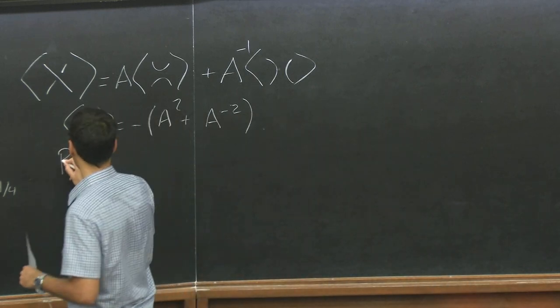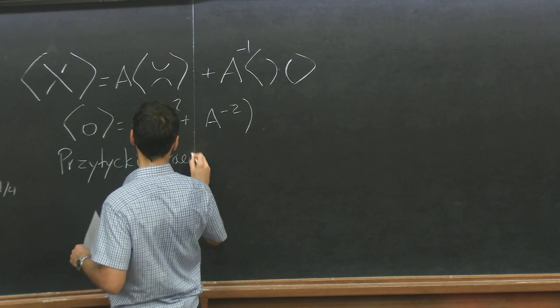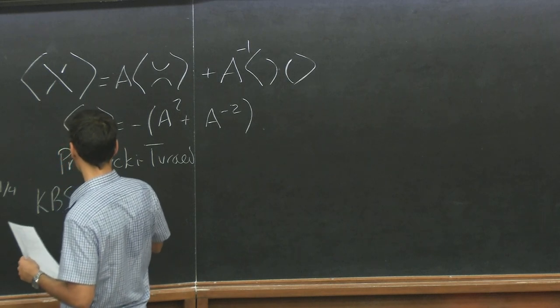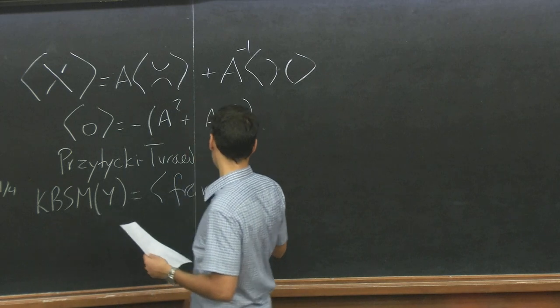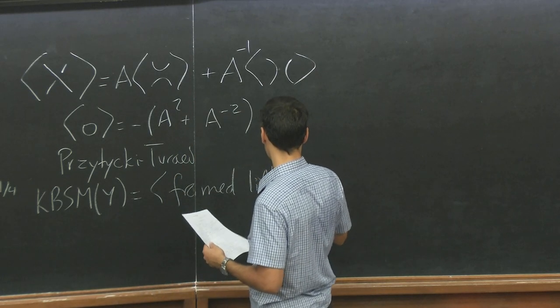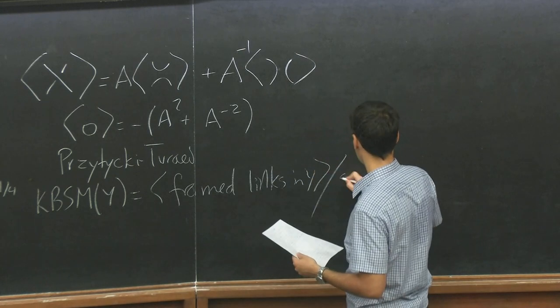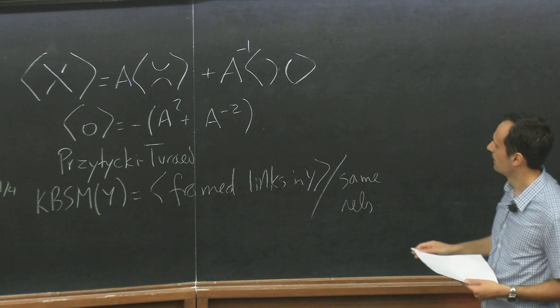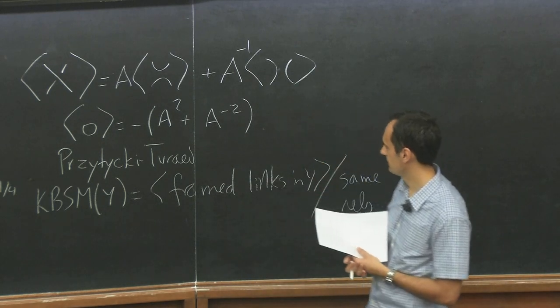Przytycki and Turaev define the Kauffman bracket skein module of Y to be the space of all framed links in Y modulo the same relations. So, yes.